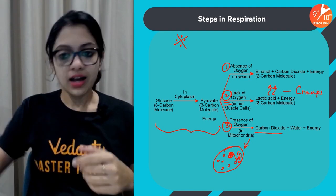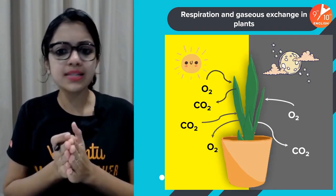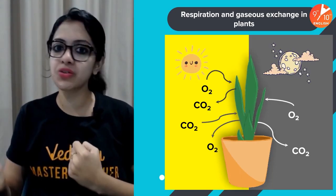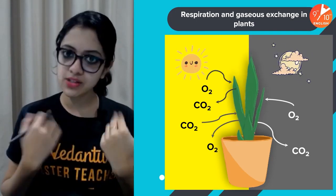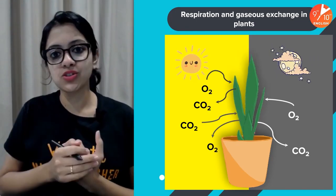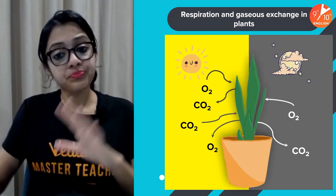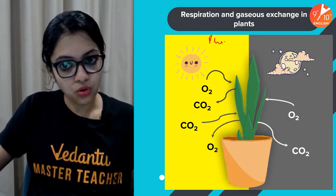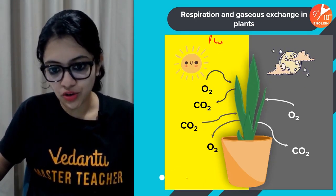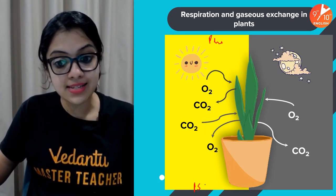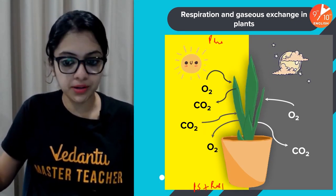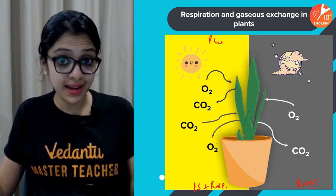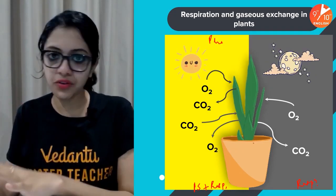In plants, during photosynthesis CO₂ is taken in and oxygen is released, whereas in respiration — just like human beings — oxygen is taken in and CO₂ is given out. During the daytime, both photosynthesis and respiration occur. In the nighttime, only respiration occurs because photosynthesis requires sunlight. In aquatic organisms like fishes, they take in water through the mouth, it passes over gill filaments, and oxygen is absorbed into blood vessels while CO₂ is given out.